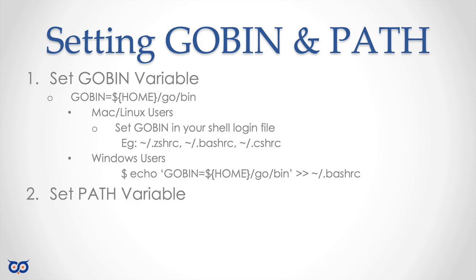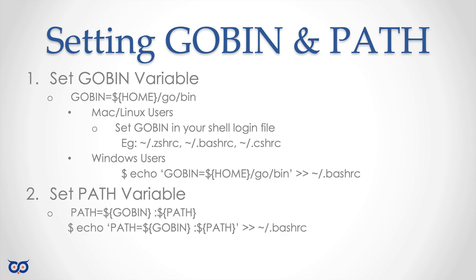Once you have your GOBIN set up, you also need to update your PATH variable so you can run installed executables. Your PATH variable is what your operating system uses to find executables. So we want to add the go-bin directory to your PATH variable. For Windows users, you can execute this command and it should update your .bashrc if you installed Git.